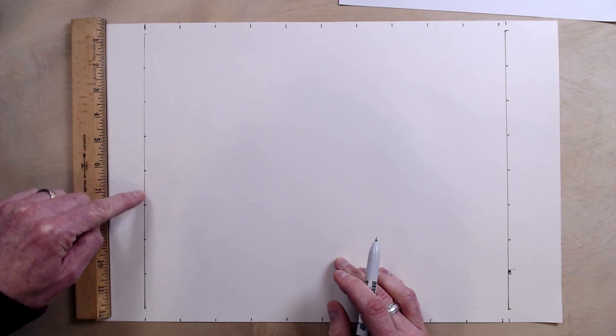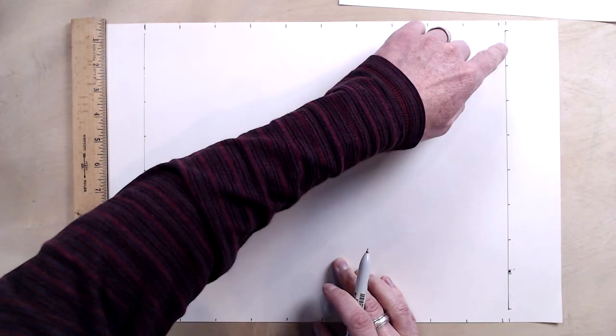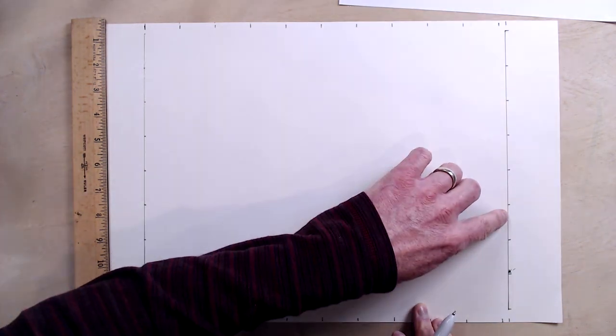Line this up on the edge here. One half of an inch, one half of an inch. I've got my marks here. That's one, two, three, four, five, six, seven, eight. One, two, three, four, five, six, seven, eight.